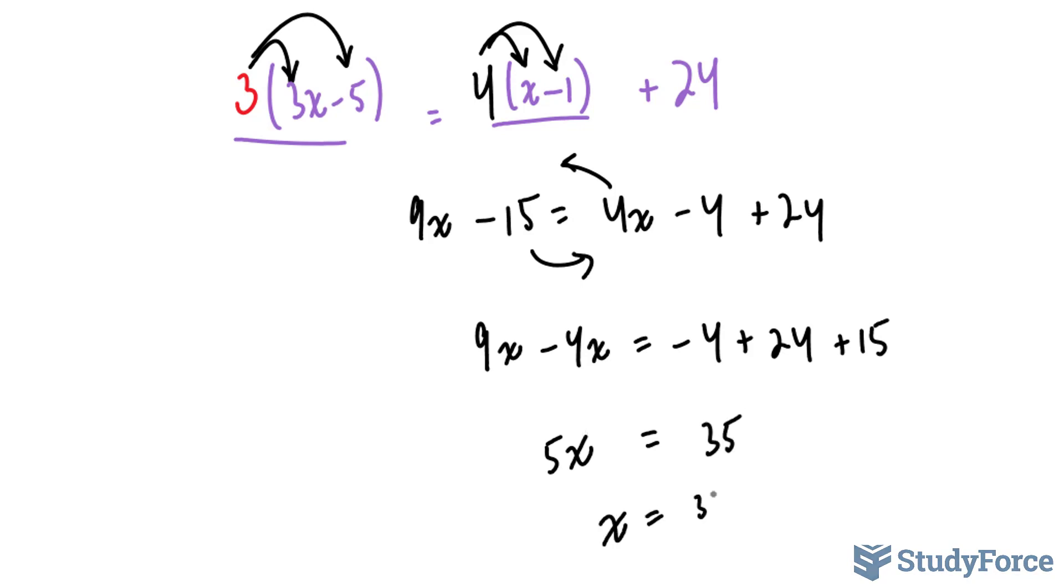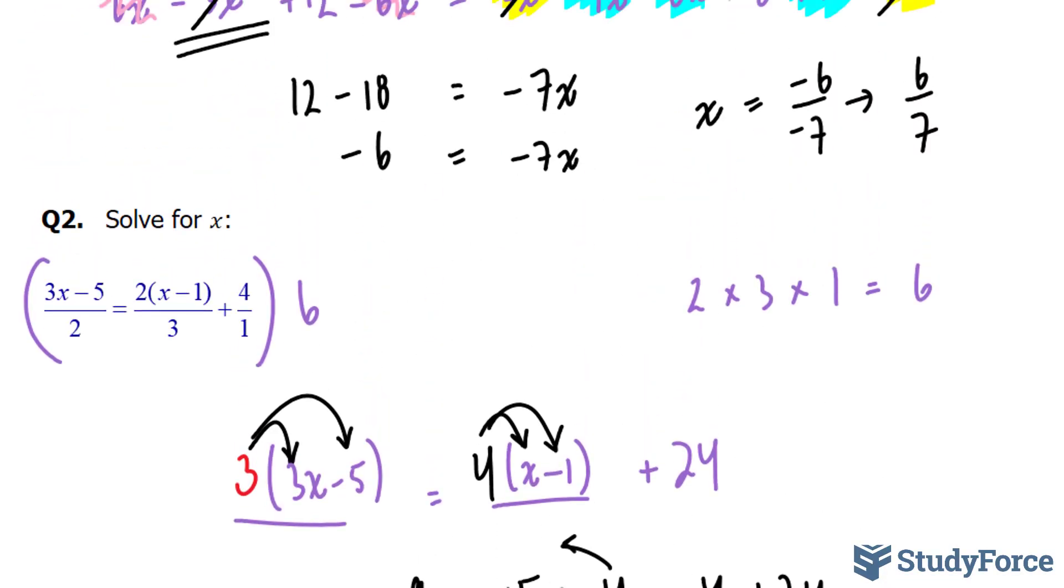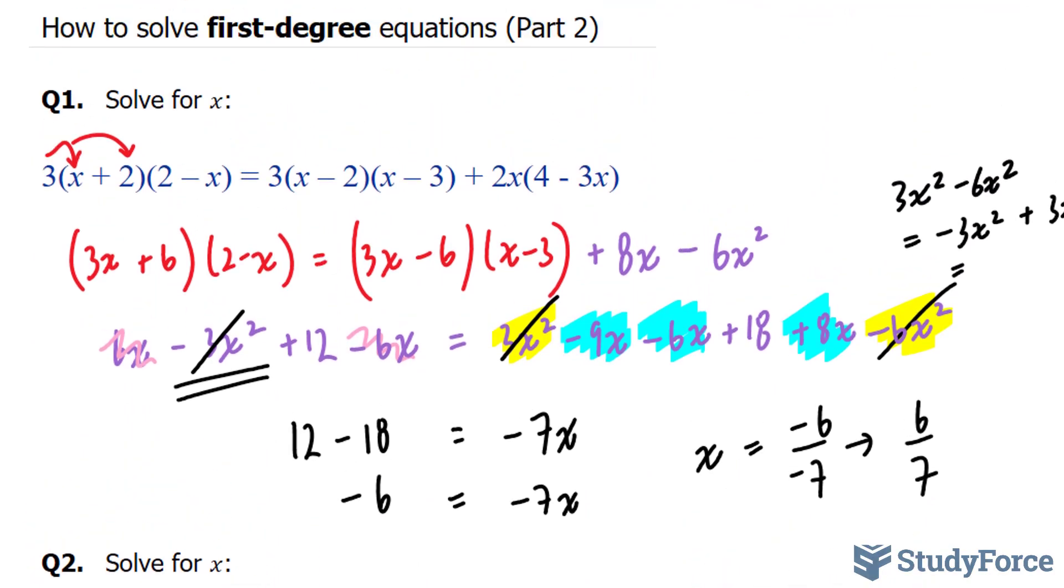The left side becomes 5x and the right side becomes 35. x should equal to 35 over 5 which is 7. So there you have it. Two more examples on how to solve first-degree equations.